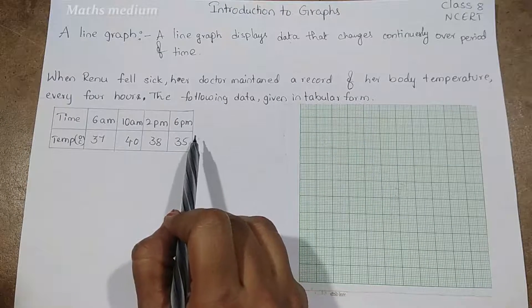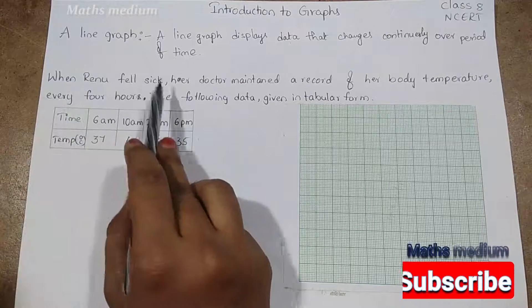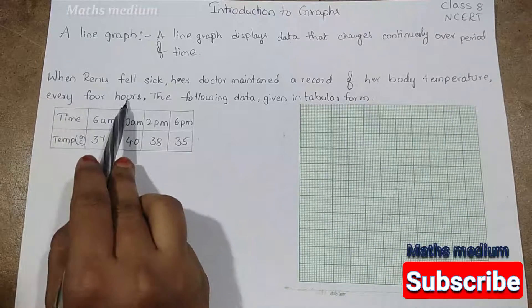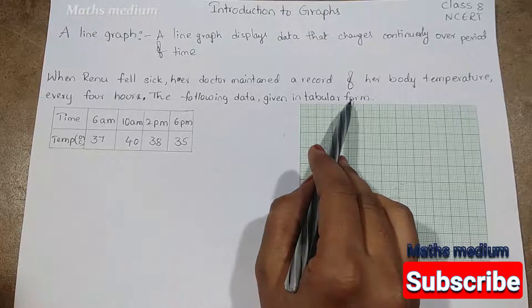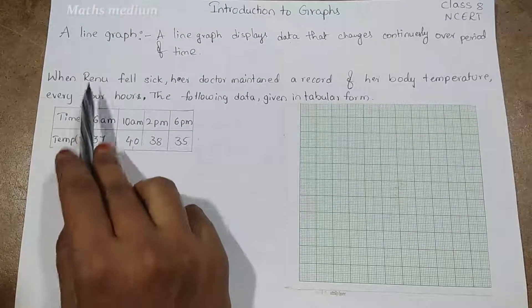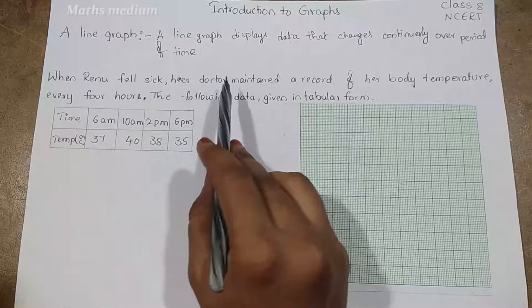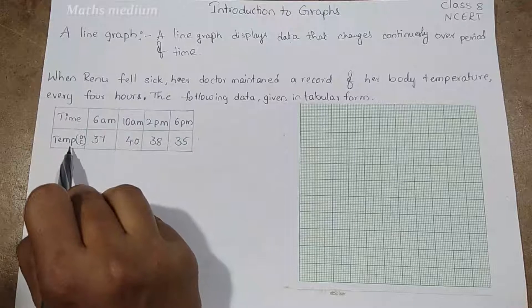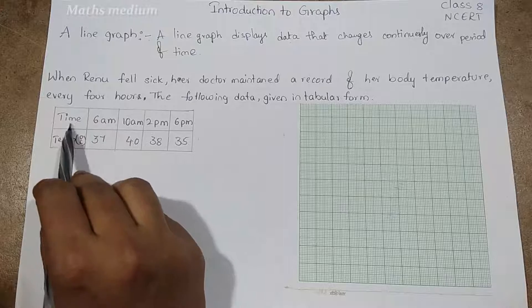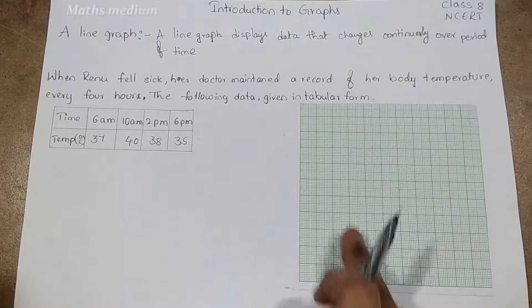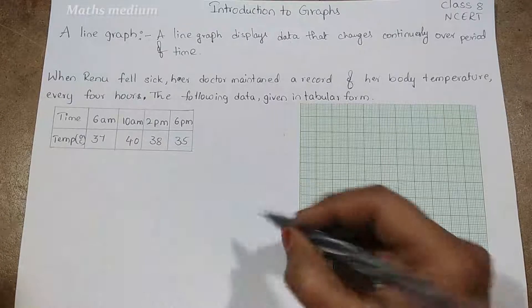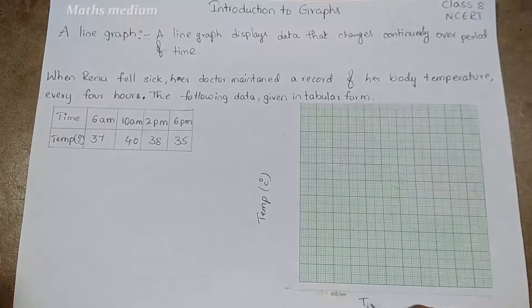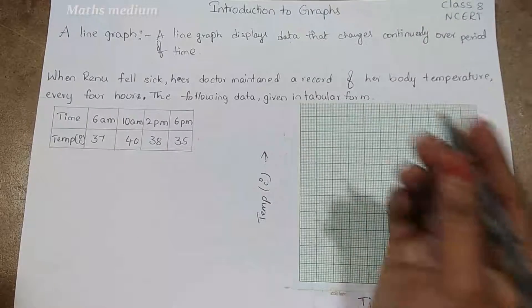When Renu fell sick, her doctor maintained a record of her body temperature every four hours. The following data given in tabular form. Here the example is Renu fell into sick and her doctor maintained a record of her body temperature every four hours. Here time and temperature—this is in degree Celsius and this is time. This is the graph we know: time versus temperature. I am taking here temperature in degree Celsius. Here I am taking time. So this axis and this axis is over. Now we have to put the markings of these given timings.